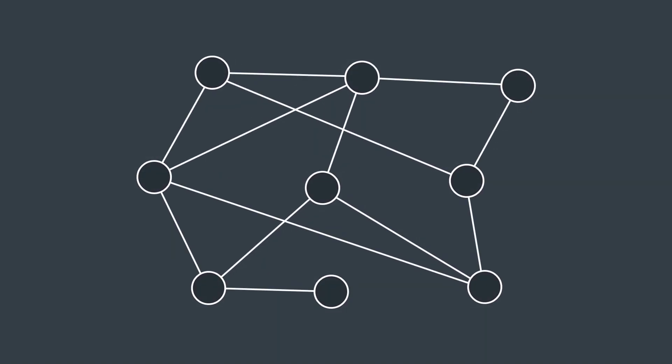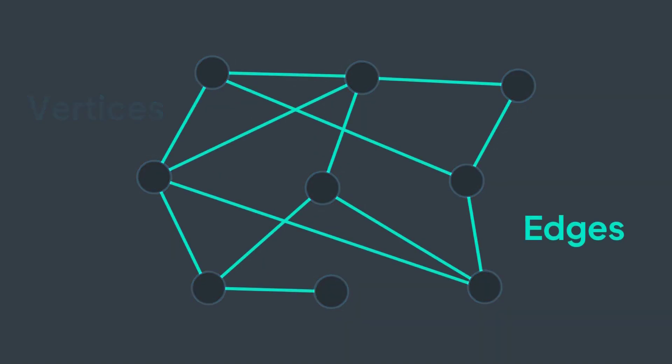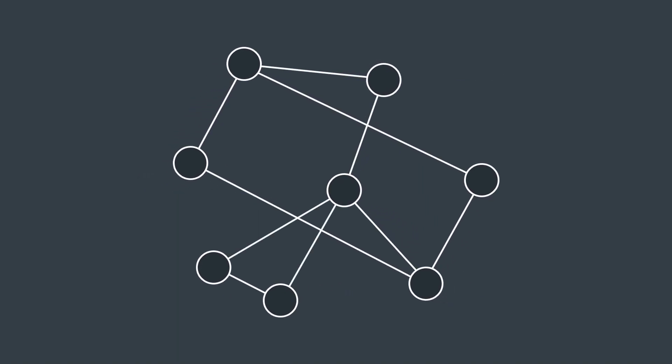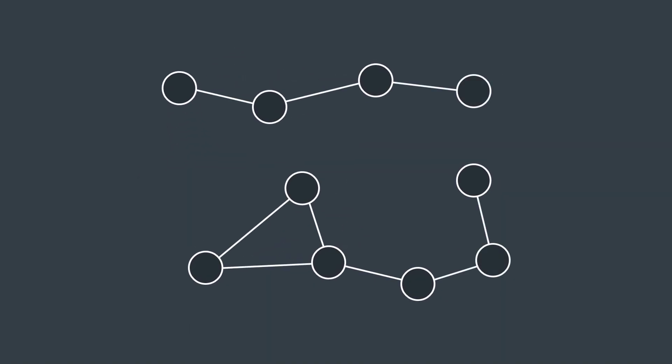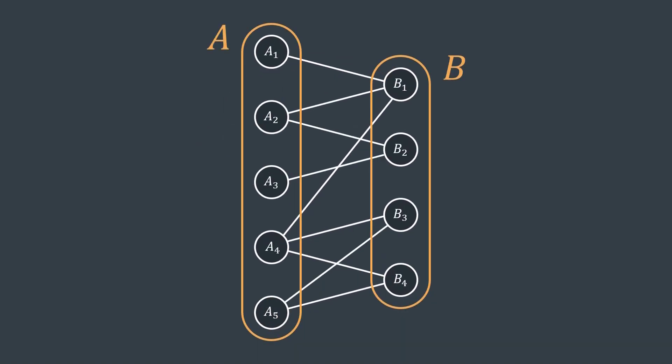This is a graph, a structure made of vertices and edges. It can come in different shapes depending on what vertices and edges we have and how we place them. Sometimes we can separate vertices of a graph into two disjoint groups A and B with no edge between vertices of the same group.